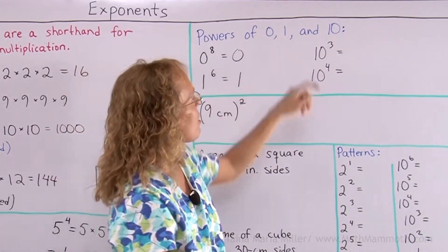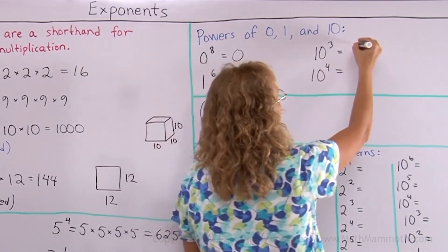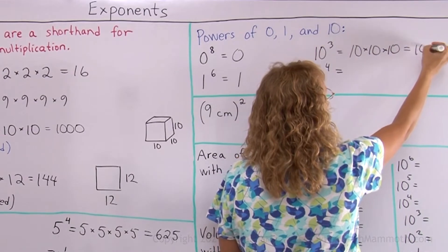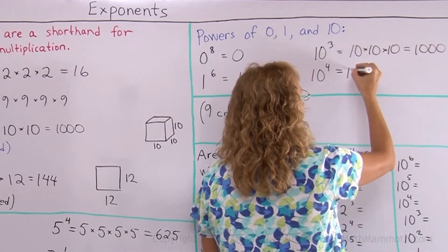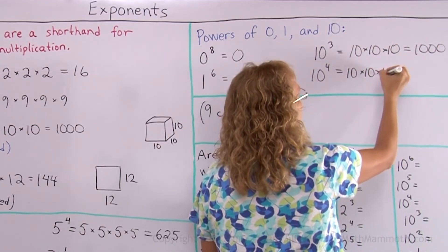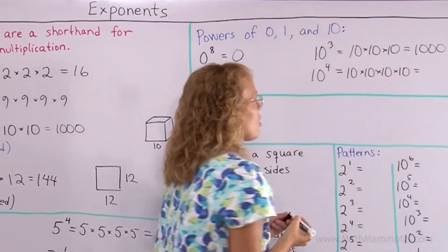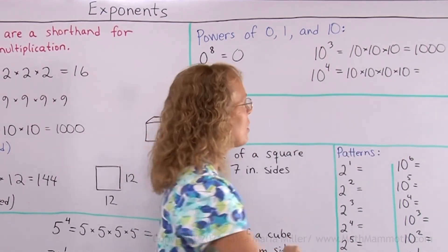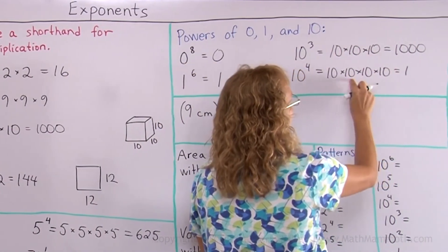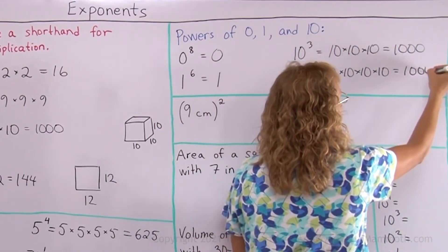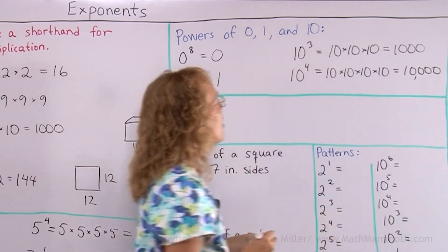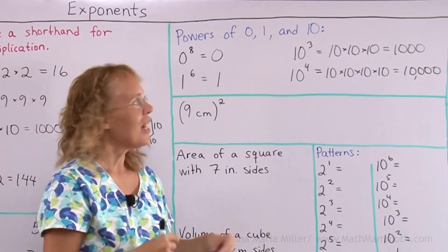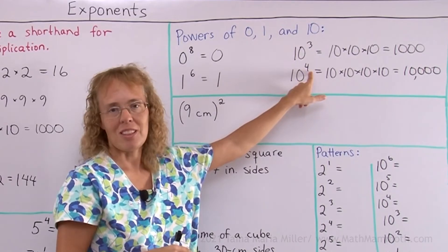Ten to the third power — there's a special thing here too. Ten cubed we solved already: it's one thousand. Now ten to the fourth power — you know there's a shortcut for these. You just go one, then you tag these zeros — four zeros. In powers of ten, all you need to do is write one and then however many zeros this number indicates.